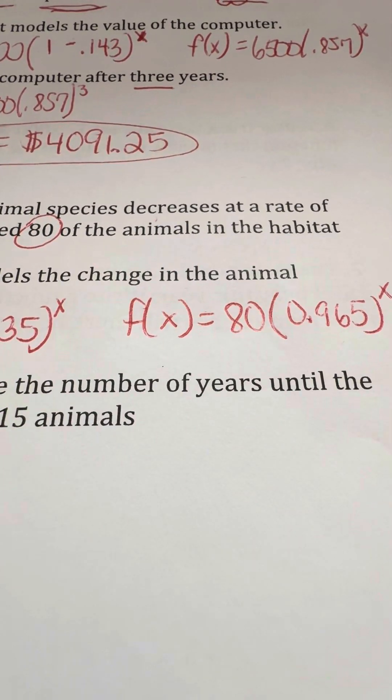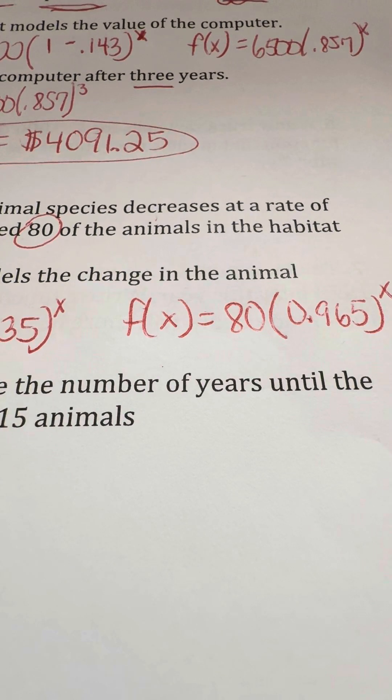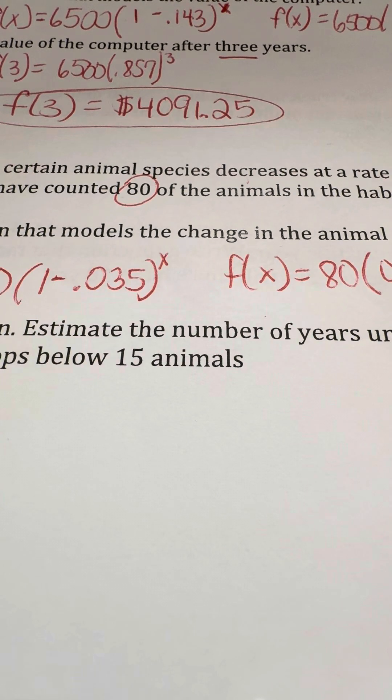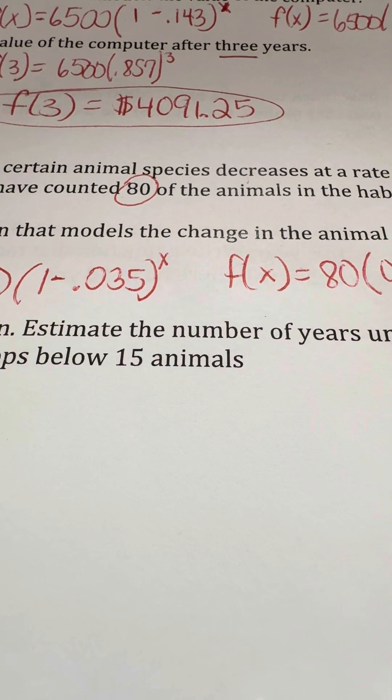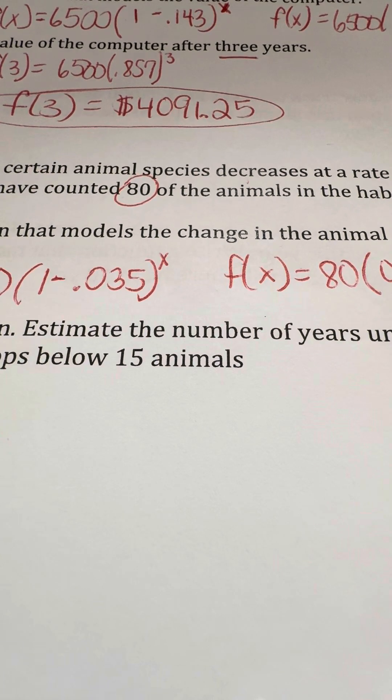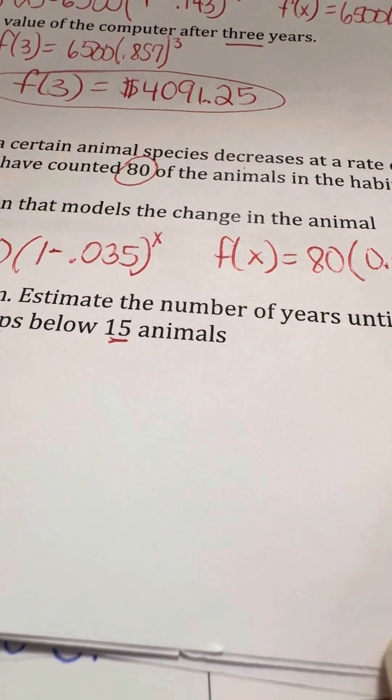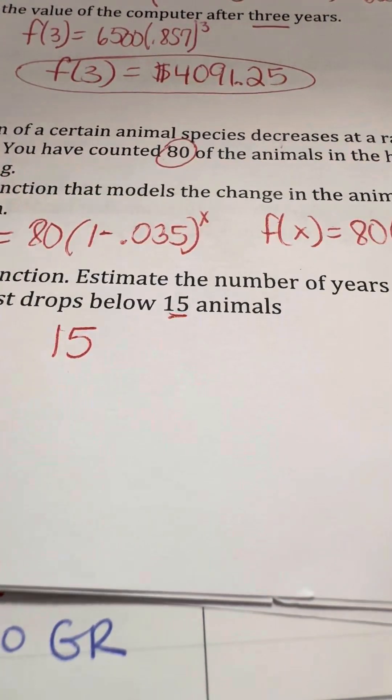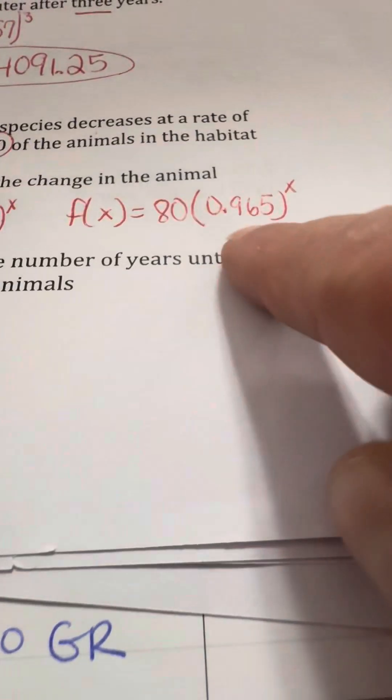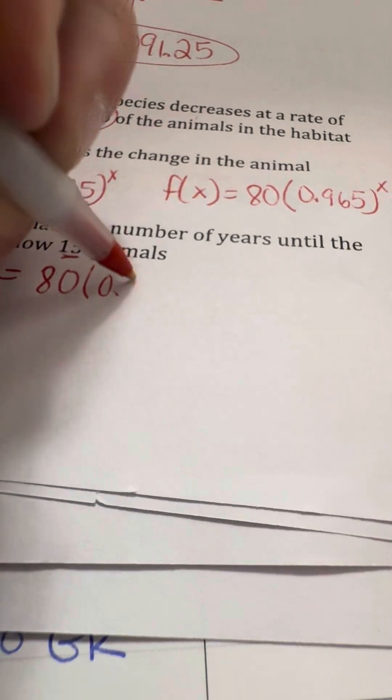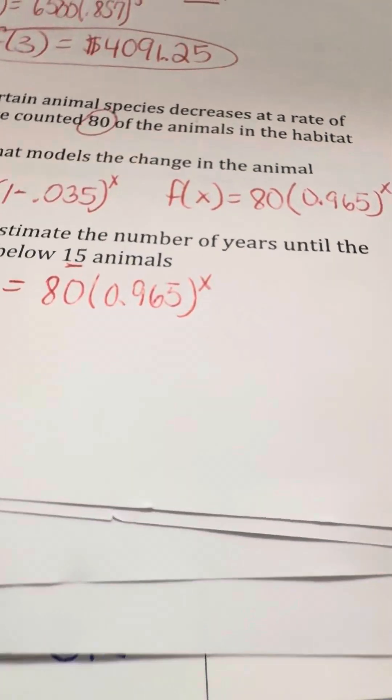Now, we could actually figure out using a table and continuously go through every single year until we figure out when it's going to be less than 15. I am going to show you a shortcut way to do this when you're dealing with getting rid of numbers around x. When x is the exponent, we're going to be using a log function on our calculator. So we're going to start off with what we're looking for. So we're looking for 15 animals. So that's my f of x part. That's my answer. We're going to use the rest of this equation right here. So we'll keep this going. So it's going to be 80 times 0.965 to the x power.